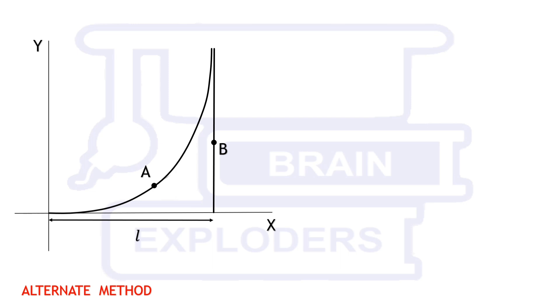According to the conditions of question, the tangent on A passes through B. Let coordinates of A and B are x, y and L, h respectively, where L is a constant but x, y and h are functions of time.